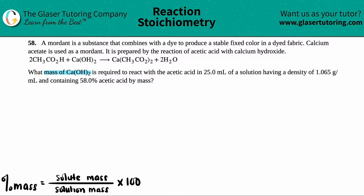The question asks: what mass of calcium hydroxide Ca(OH)₂ is required to react with the acetic acid in 25.0 mL of a solution having a density of 1.065 g/mL and containing 58.0 percent acetic acid by mass?